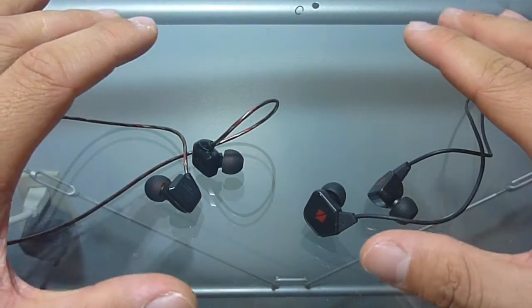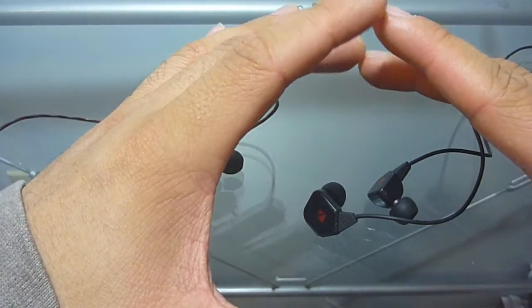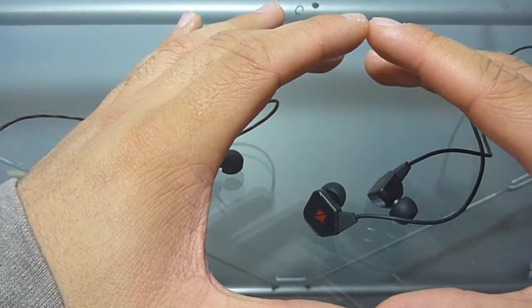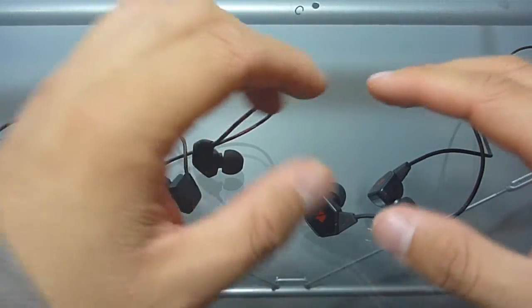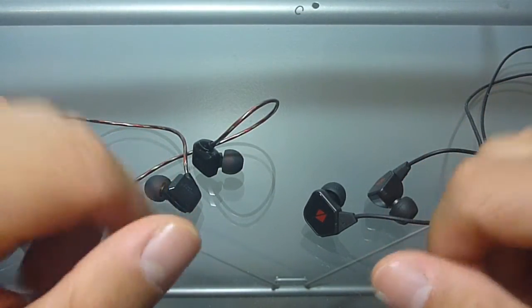I still think that the Havi B3 Pro 1s are a fantastic option if you're looking for a neutral earphone with a very big sound stage and you're on a budget. So let's get into the nitty gritty in terms of the sound quality. Now going into the bass,